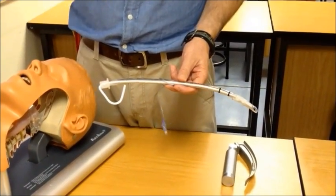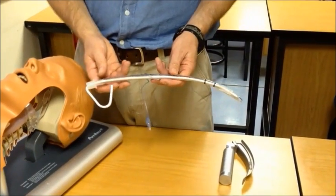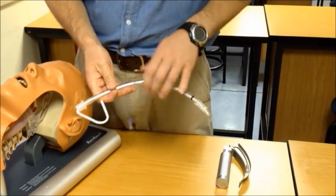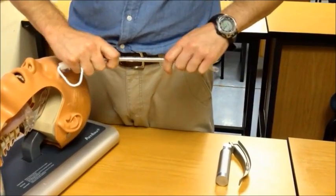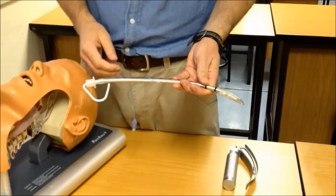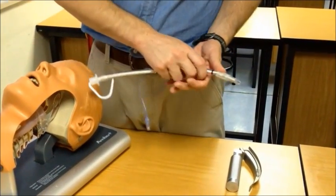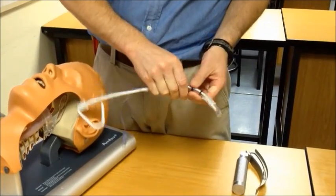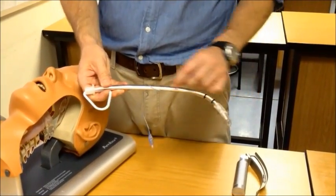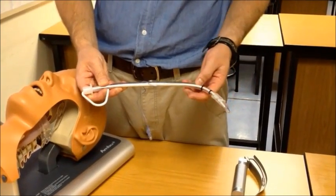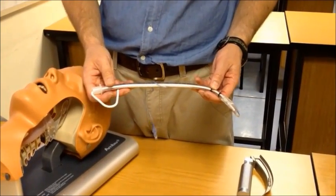Once the stylet has been introduced into the ET tube, there are many different ways that you could mould it. The classic way is a simple curve. Many clinicians now prefer what is called the hockey stick configuration, where the ET tube is bent like a hockey stick close to the end and kept relatively straight. How close you bend it to the edge of the tube is up to personal preference and the size of the patient.